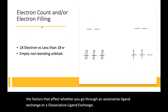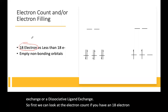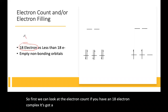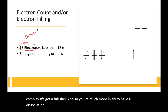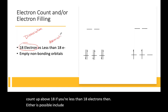First, we can look at the electron count. If you have an 18-electron complex, it has a full shell, so you're much more likely to have dissociation rather than a new ligand binding and bringing the electron count above 18. If you're less than 18 electrons, then either mechanism is possible, but association can occur.